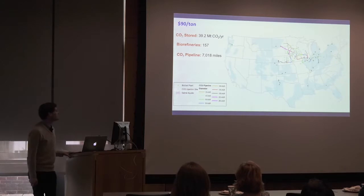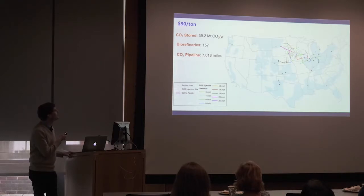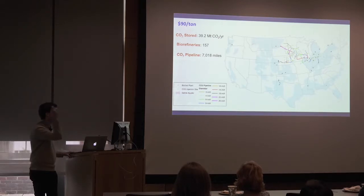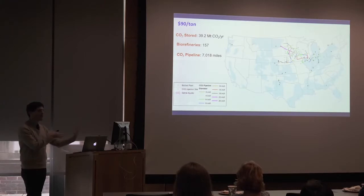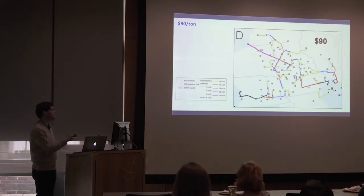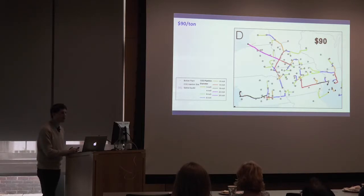At $90 a ton, you see the vast majority of CO2 captured — about 40 million tons out of 45 — from well over three-quarters of biorefineries, with 7,000 miles of CO2 pipeline. You start including smaller plants in the Northeast, Pacific Northwest, and South. At $120 a ton it looks a lot like $90 because you really run out of CO2 to capture — you're already getting the vast majority between $60 and $90 a ton.